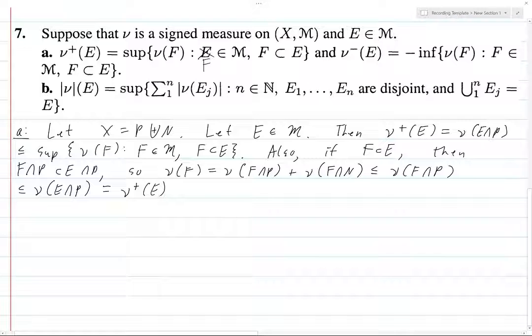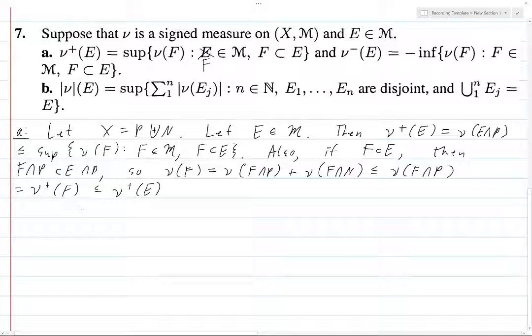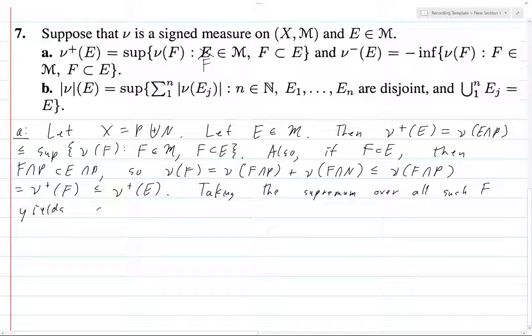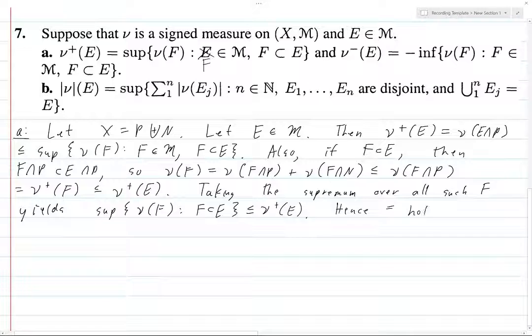This is just ν⁺(E). A better way of writing this would be: this equals ν⁺(F), and that's less than or equal to ν⁺(E), where we're using the fact that ν⁺ is a positive measure. Taking the supremum over all such F yields: sup over all ν(F) with F subset E is less than or equal to ν⁺(E). Hence equality holds, because the inequality holds in both directions.